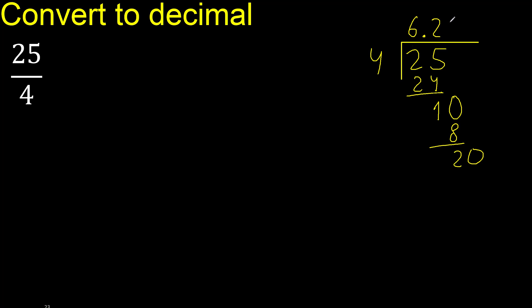20. 4 times 5 is 20. 20 minus 20 is 0. 0. Therefore finish.